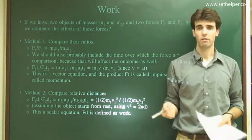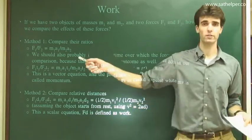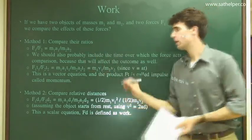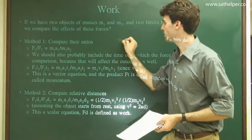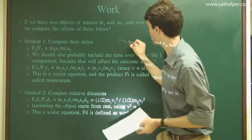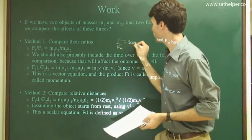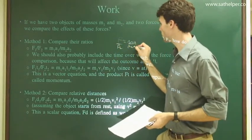So one method of comparison is to take the ratio of the forces, force 1 divided by force 2, and that's simply, you know, F equals ma divided by F2 equals m2a2.